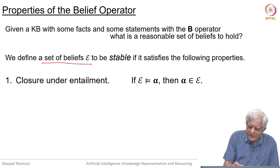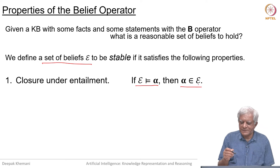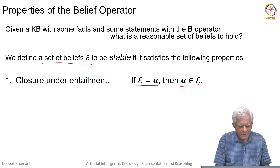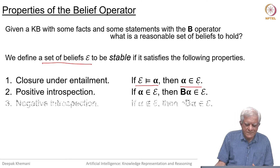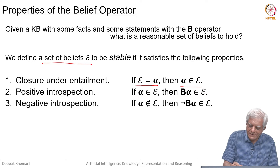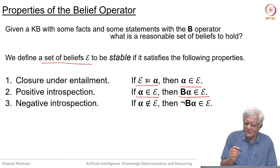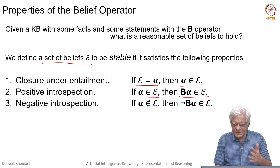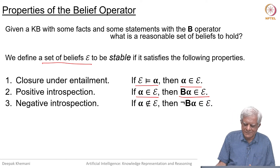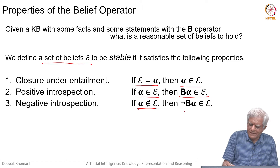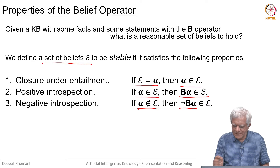Closure under entailment means: if epsilon entails alpha, then alpha must belong to epsilon — you must add everything that can be inferred into the set of beliefs. Positive introspection says that if alpha is in epsilon, you must add B(alpha) to epsilon. This will of course lead to an infinite set of sentences, but in practice we make some assumptions that we only go to a certain depth. Negative introspection says if alpha does not belong to the set of beliefs, then add 'not B(alpha)' to the set of beliefs.